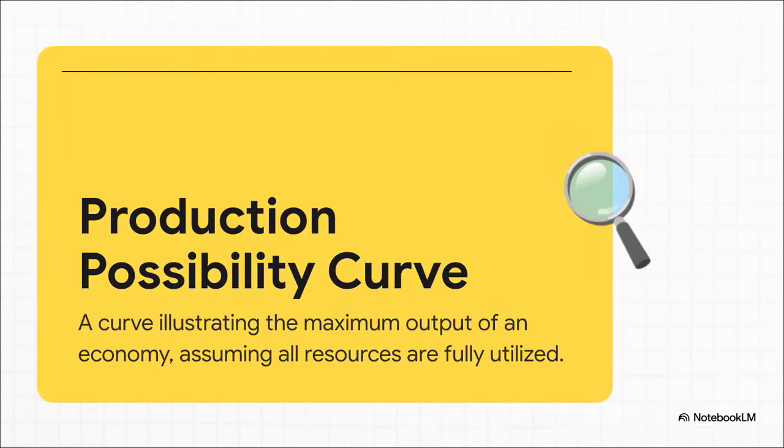To really get our heads around this, economists have this really cool visual tool. It's called the Production Possibility Curve, or PPC for short. Just picture this curve as the absolute maximum, the outer limit of what an economy can possibly produce right now, with everything it has. So for real growth to happen, we can't just shuffle things around inside that boundary. We have to push the whole boundary line outward. And figuring out how to do that, that's what this is all about.